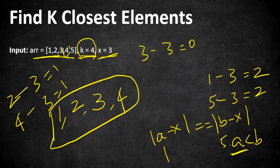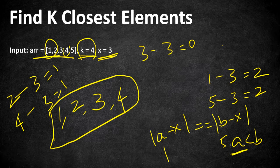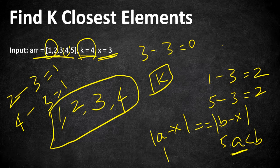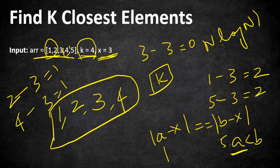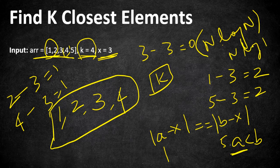We can use a comparator in Java or any programming language to sort elements based on the absolute difference between each element and x. Sort the elements based on the difference and the first k elements will be the result. That is the brute force approach, which takes O(n log n) time to sort and O(n log k) to compare and save differences.